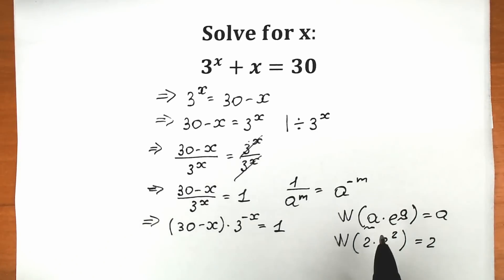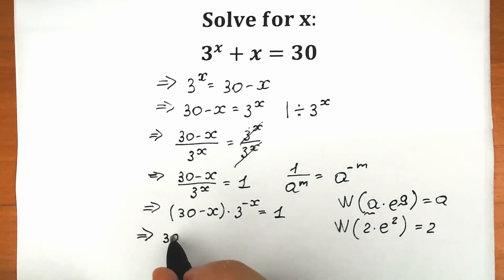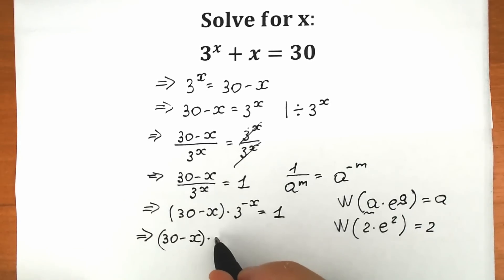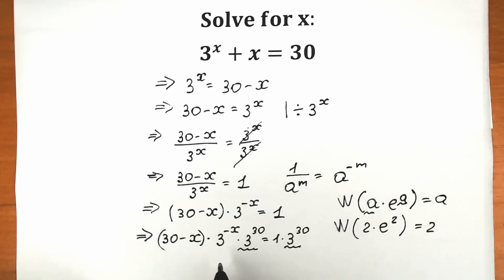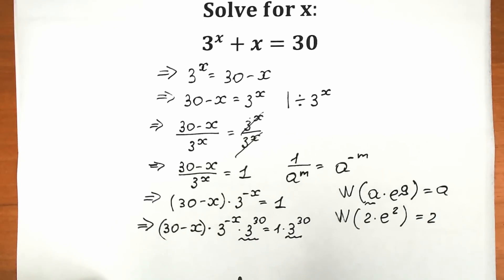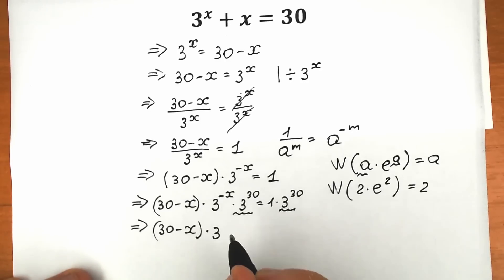Now let's try to create an expression suitable for Lambert W. Let's multiply both sides by 3 to the power 30 — this is a really important, tricky moment. On the left side we get 30 minus x times 3 to the power minus x times 3 to the power 30, and on the right side 1 times 3 to the power 30. Since the bases are the same, we add exponents: minus x plus 30 gives 3 to the power 30 minus x, yielding: 30 minus x times 3 to the power (30 minus x) equals 3 to the power 30.